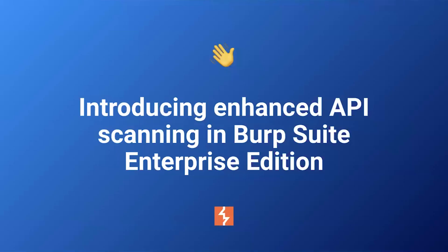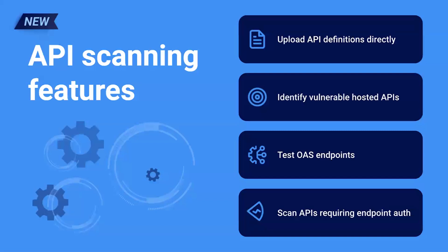So with all that being said, we're going to get into the meat of things and talk about how we've gone about introducing enhanced API scanning in Burp Suite Enterprise Edition. As Alex said, we have had API scanning in Burp Suite Enterprise Edition for a long time. I'm going to cover the enhancements we've brought in. We understand that users want to be able to scan API definitions in isolation, so we're hoping this will expand our capabilities even further. The four new additional features I'll cover are: uploading API definition files directly into Burp Suite Enterprise Edition; identifying vulnerable APIs with our new OpenAPI scan check; how to test OpenAPI schemas with different endpoints; and also looking into our authentication offerings.